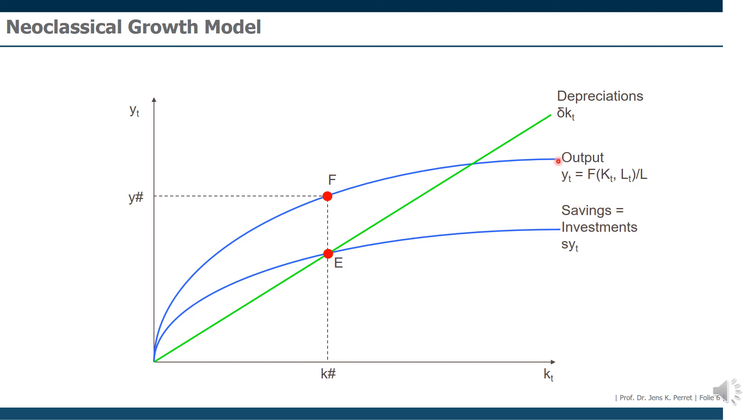In addition to this, I'm also noting here the depreciations as simply the factor delta times, again I'm doing this per capita, the capital stock per capita. In this case, this will be a simple straight line. Well, what did we show in the model? We showed basically that the capital stock in the steady state results from the situation where the increase in the capital stock, so the investments, which here are equal to the savings, are identical with the depreciation.